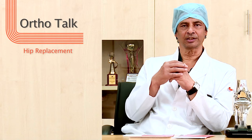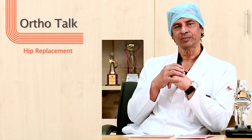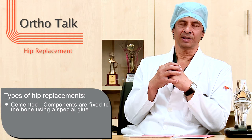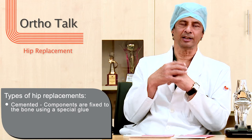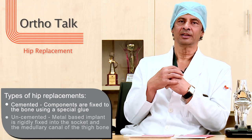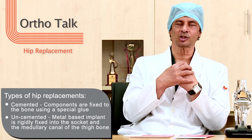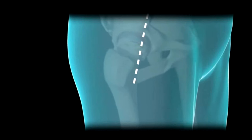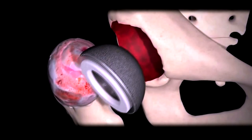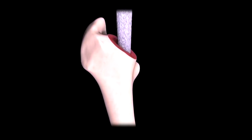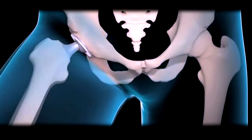Hip replacement basically involves replacing the socket, which is called the acetabulum, and the head, which is called the femoral part of the hip. There are broadly two types of hip replacements: one is the cemented type, where the components are fixed to the bone using polymethyl methacrylate, which is a sort of glue. Then we have the uncemented type, which is a metal-based implant fixed as a press-fit — rigidly fixed into the socket and into the medullary canal of the thigh bone. Bone grows into it because of the mechanics of the material used. There is something called hydroxyapatite, which is what bones are made out of, and the implants are sprayed with this hydroxyapatite material so that bone will grow into it and lock it into place.